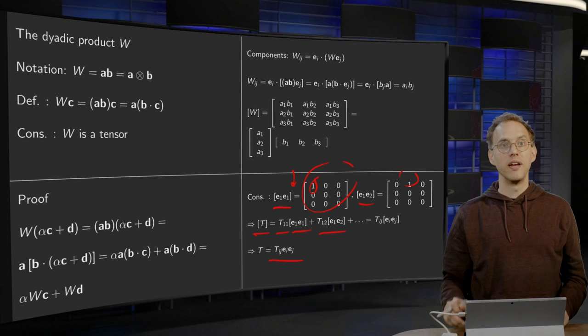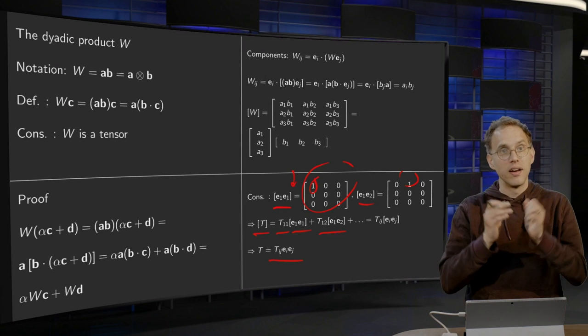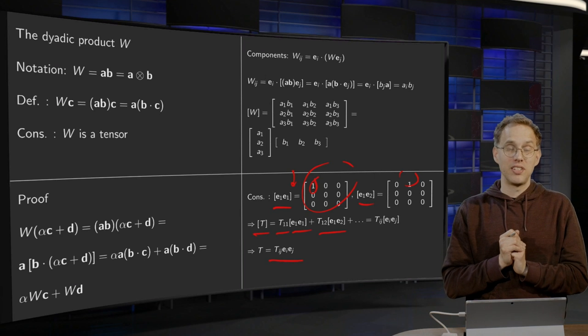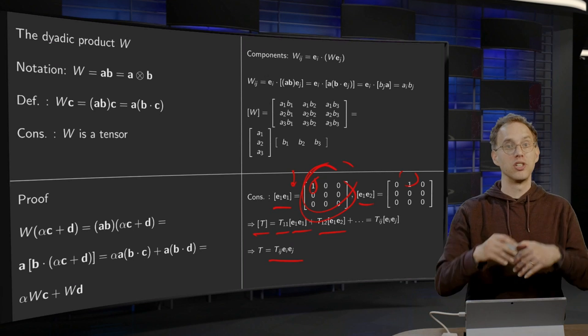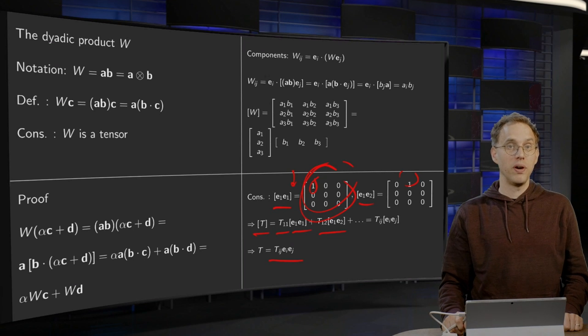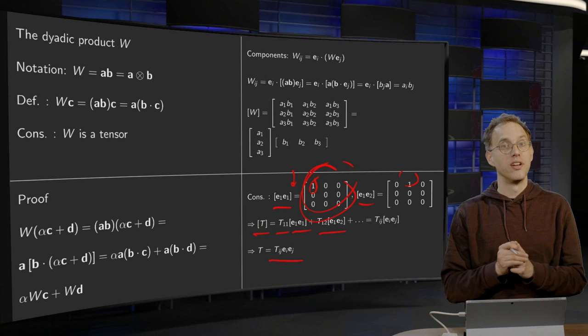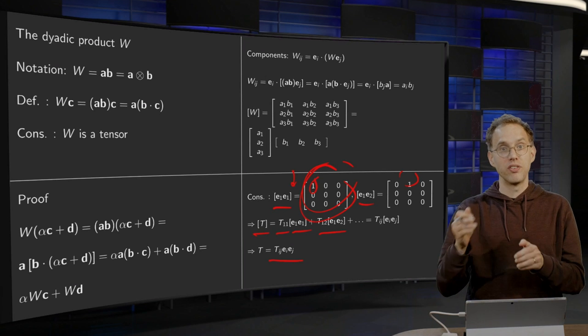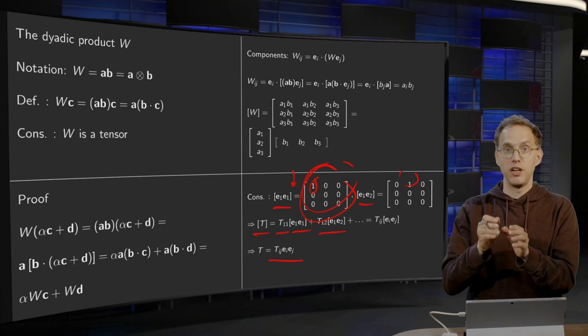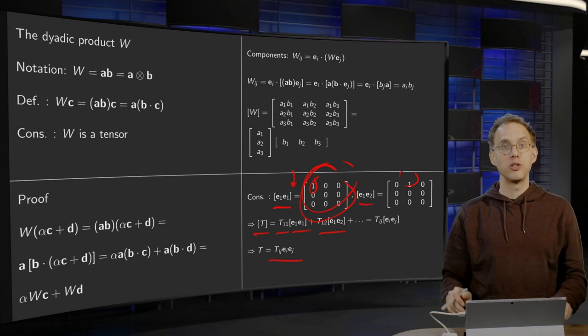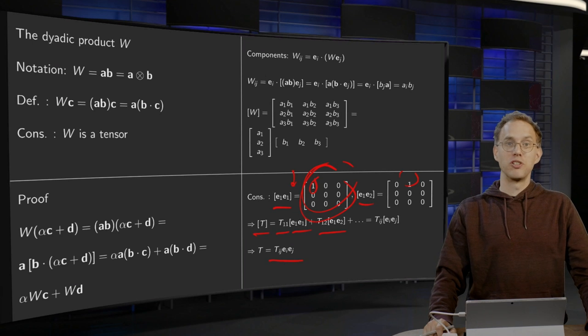So, in this way, you can write, you basically expand your tensor T in, say, some basic tensors, similar to the way you can expand a vector in E1, E2, E3. You can expand your tensor T in your dyadic products, E1, E1, E1, E2, and so on. So, that's a nice consequence of our dyadic product.